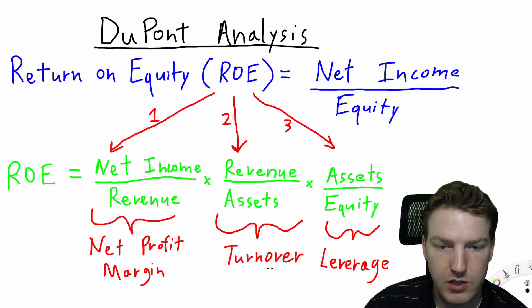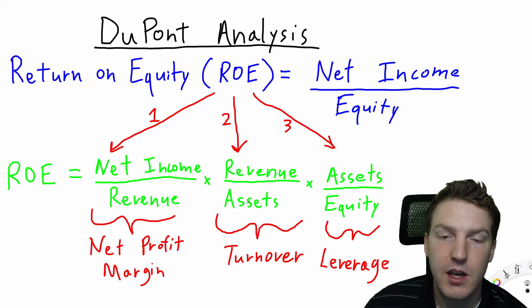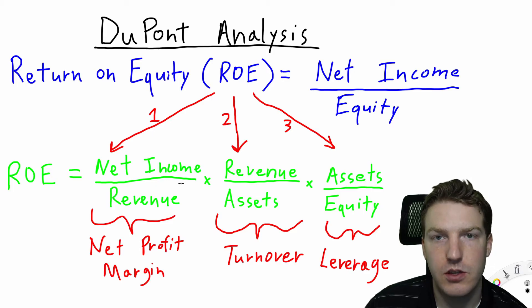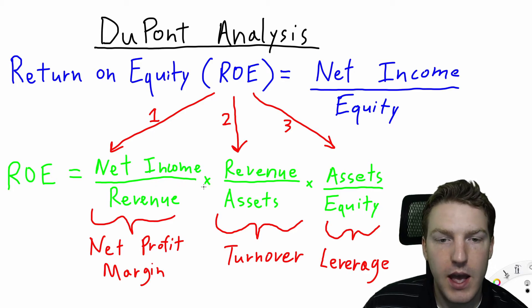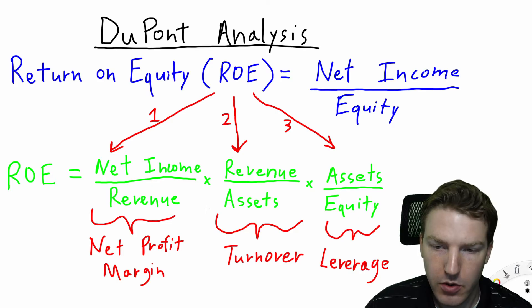The next component, asset turnover, is just revenue divided by assets. This tells us how quickly this company is turning over its inventory.